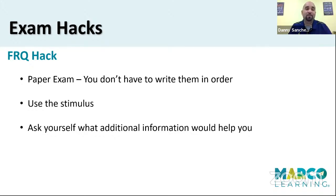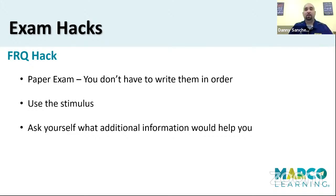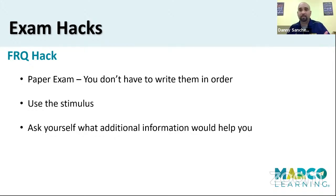The third FRQ hack: ask yourself what additional information would help you. There is usually one of the FRQs that has something along the lines of 'what information is missing' or 'what additional information would help.' Just ask yourself, what would make this easier to write? If you knew average incomes or the natural increase rate of a country, would this make it easier to answer? They might be looking for that — 'describe information that would help you explain this better.' What information is missing? Those are our exam hacks.